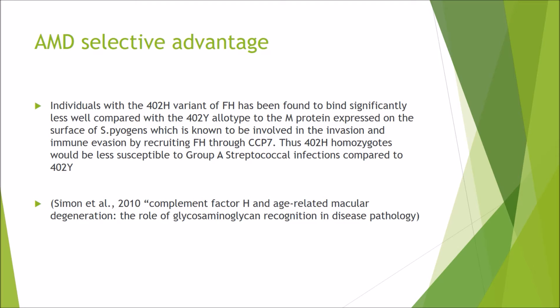This selective advantage means people with the AMD-associated variant are more likely to survive and pass on their genes. A parallel can be seen in Africa, where those with sickle cell anaemia have a selective advantage because malaria - which kills millions per year - is less likely to affect them, making them more likely to pass on their genes.